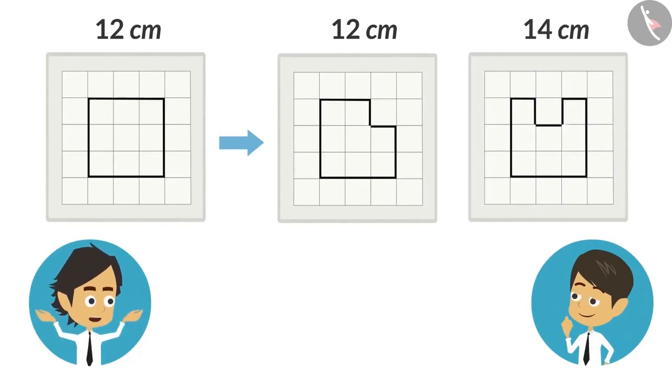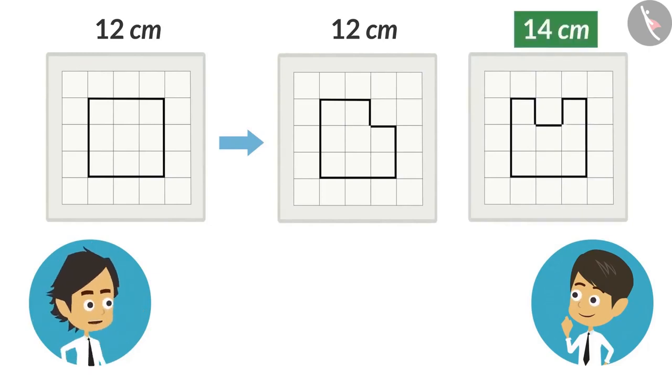This means changing the shape may change the length of its boundary or may not change the length of its boundary. Did you get it?